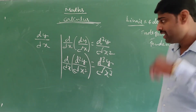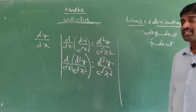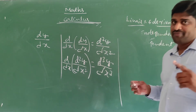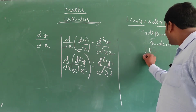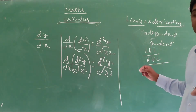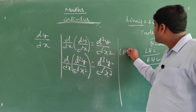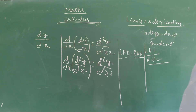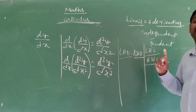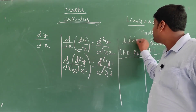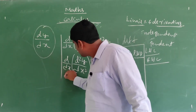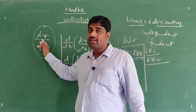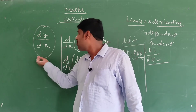Now, what is meant by differentiability? I already learned LHL and RHL — left hand limit and right hand limit. But here we have LHD and RHD — LHD means left hand derivative, RHD means right hand derivative. When left hand derivative is equal to right hand derivative, that is called differentiability.